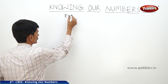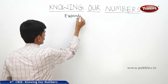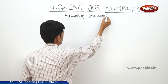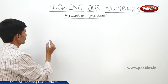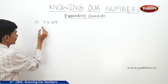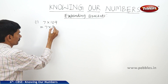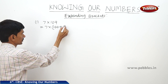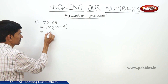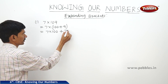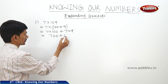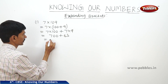Now let us see how to expand the brackets. If you take the product 7 into 109, this can be written as 7 into (100 plus 9). So this equals 7 into 100 plus 7 into 9, which is 700 plus 63, giving us 763.